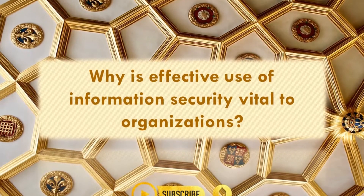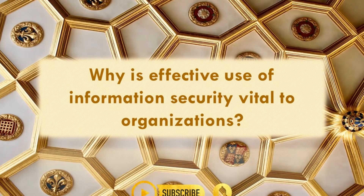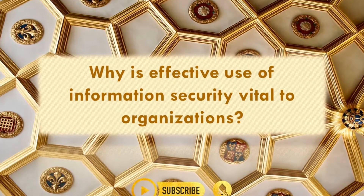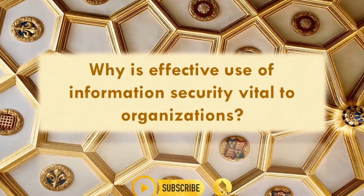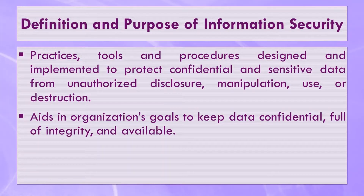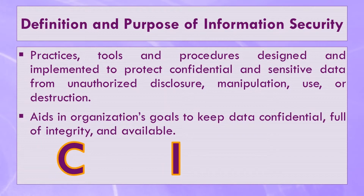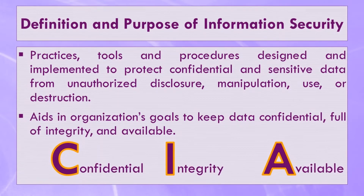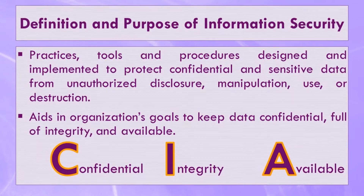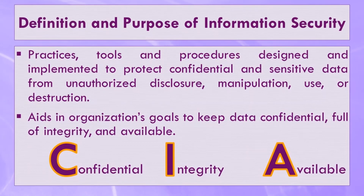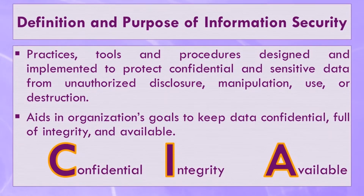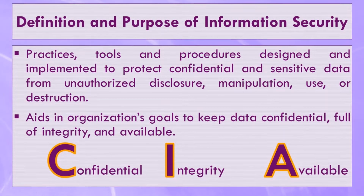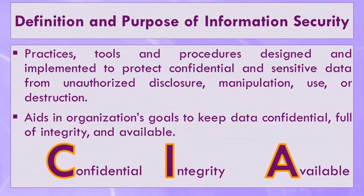Now that we know what information security is, let's find out why it is vital to organizations. The primary purpose of information security is to keep data and information confidential, full of integrity, and available for use when needed. In other words, CIA. Information security is used for C — confidentiality, I — integrity, and A — availability.